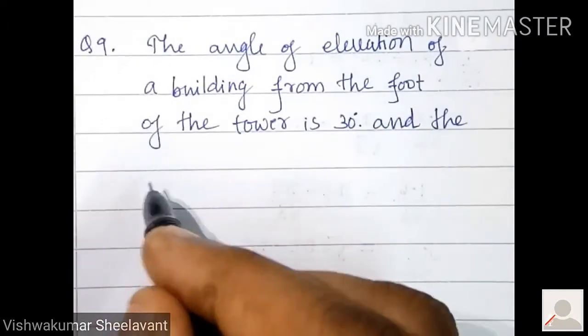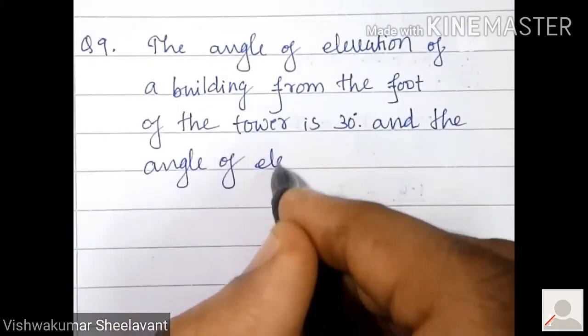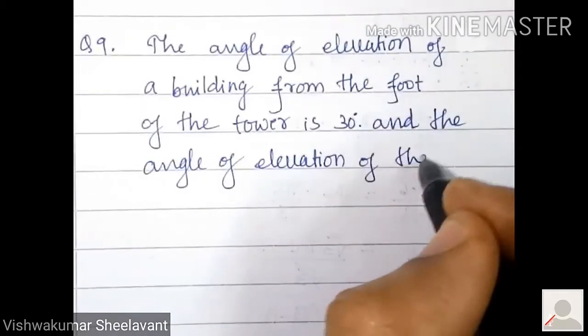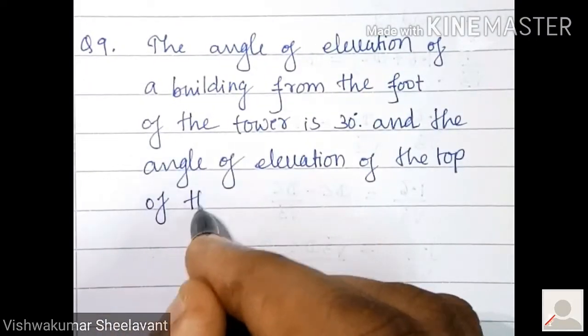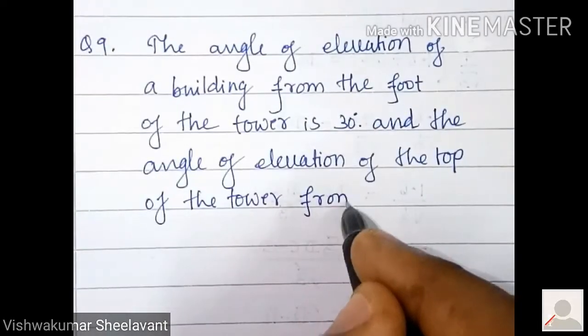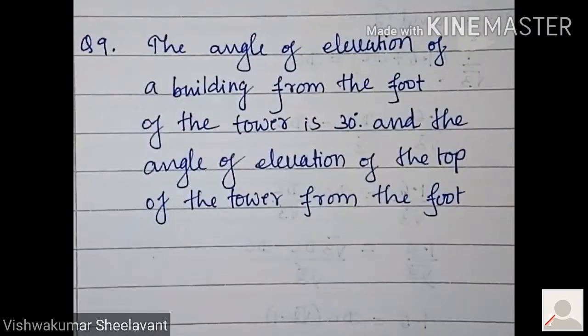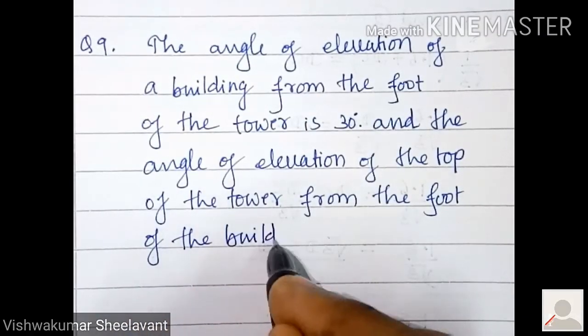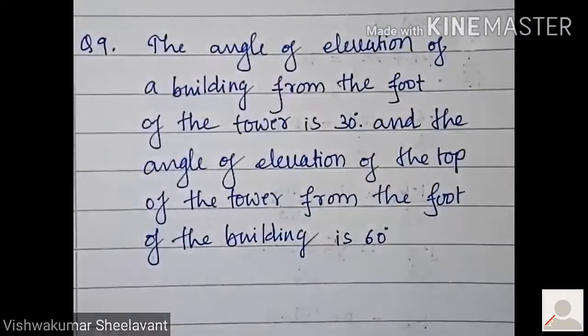the angle of elevation of the top of the tower from the foot of the building is 60 degrees.